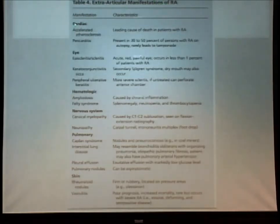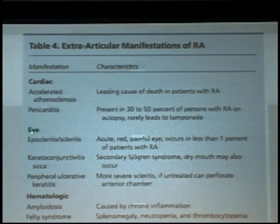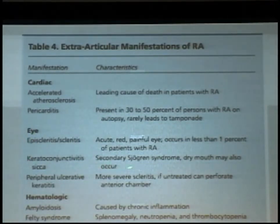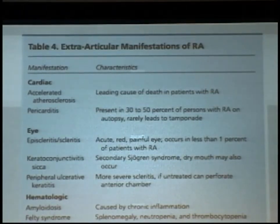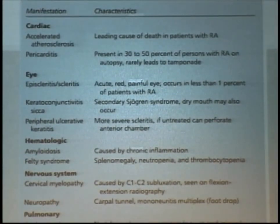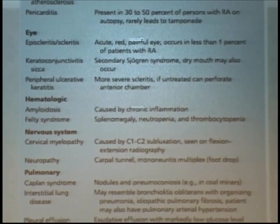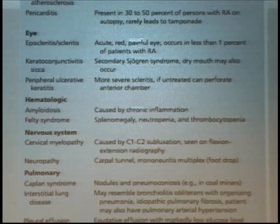Regarding extra-articular manifestations: the most common cardiac problem is pericarditis, and there's an increased risk of coronary artery disease. The most common eye problem is dry eyes — secondary Sjogren's — though it can be hard to differentiate primary Sjogren's with arthritis from RA with dry eyes. More severe ocular findings include scleritis, episcleritis, and even scleral perforation, requiring an ophthalmologist, high-dose steroids, possibly surgery or ocular injections.